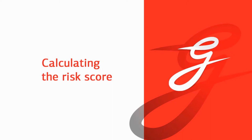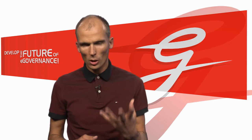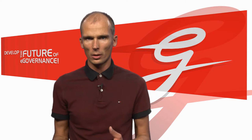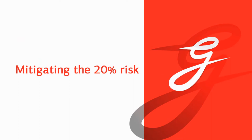We compare them by calculating the risk score, multiplying probability by extent. When we round the total risk scores to the nearest integer, the risk score of alien destruction is basically zero and the risk score of hard disk failure is about twenty percent. So clearly we have to focus all our attention on mitigating this twenty percent scored risk — hard disk failures — and we can pretty much ignore the alien invasion.